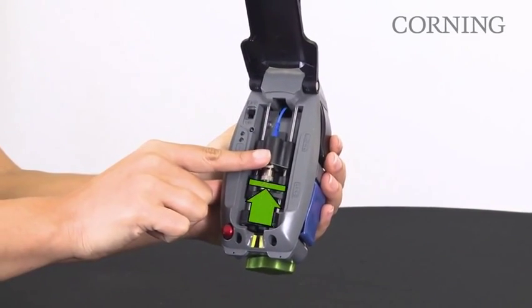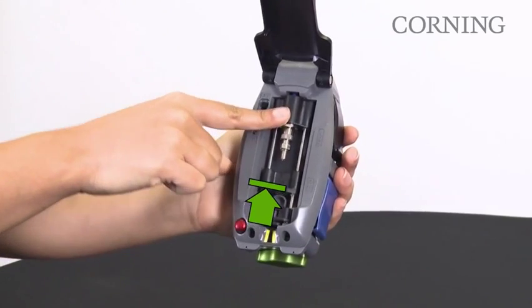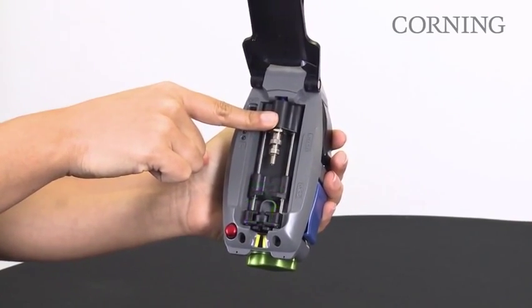Make sure the VFL coupler is at the top of its travel path. Apply slight pressure until a positive stop is reached.